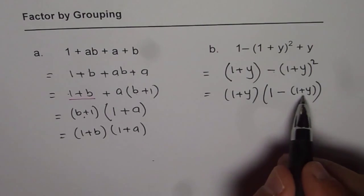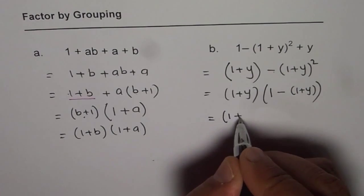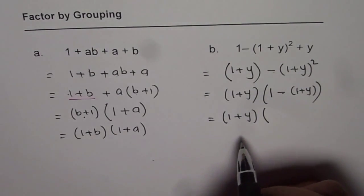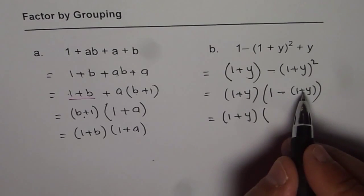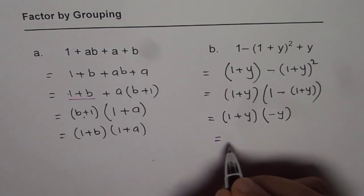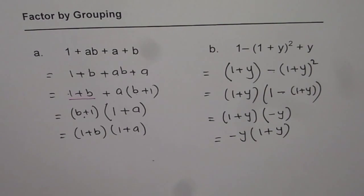You should write them in brackets. Now let us open this bracket. So what do we get? (1 + y) times, 1 minus 1 is 0, and minus 1 times plus y is minus y, correct? So we get (1 + y)(-y) as our answer.